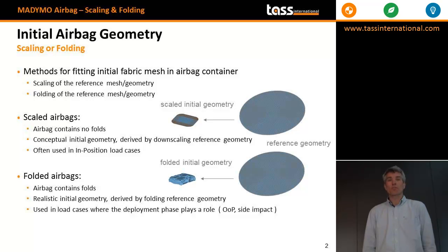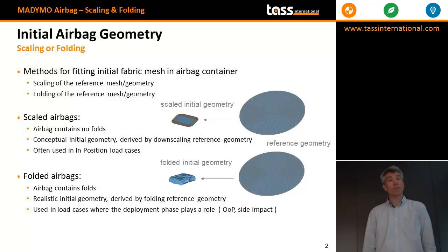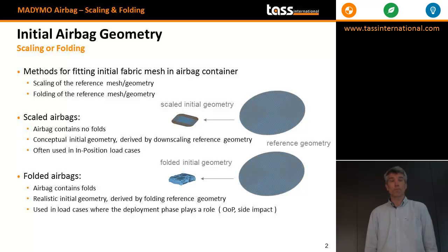As mentioned in the previous presentation, if you're going to use fabric shear — and in principle also Ortolin — you have material direction dependencies. Those are typically defined with respect to the reference geometry. There is even a third option: an airbag without a reference mesh, which might be in an unfolded state, such as a curtain. Those don't require a reference mesh, although it might be convenient to define one for material directions, for example, or if you would like to fold it later on.